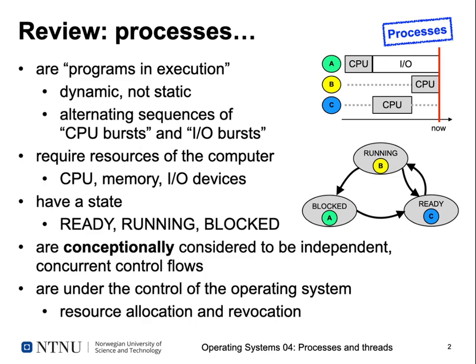Processes have a state. Running processes are those currently executing on the CPU — in a single CPU system, only one process runs at a time. Ready processes have all the resources they need except for the CPU. When a running process is moved to ready or blocked, another process from the ready queue can be moved to running.